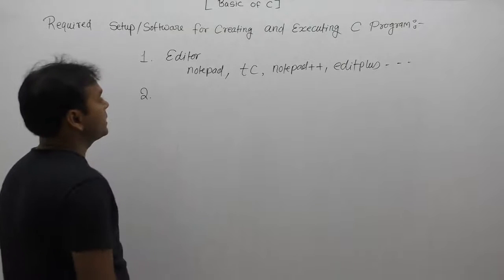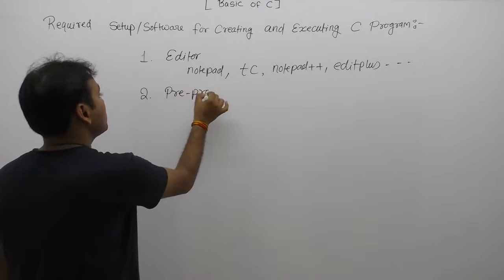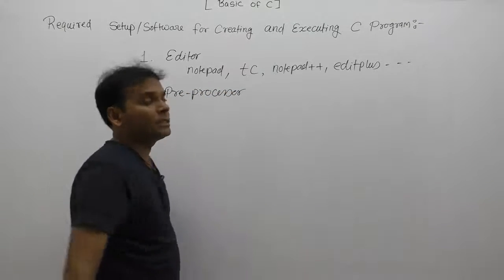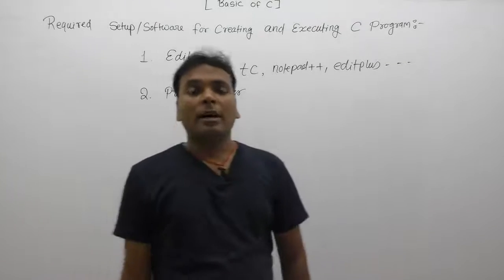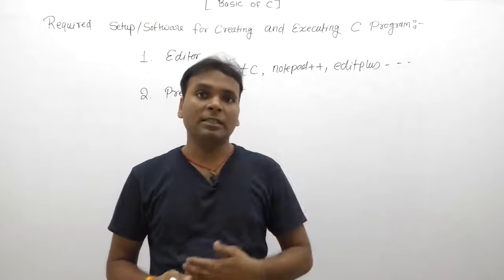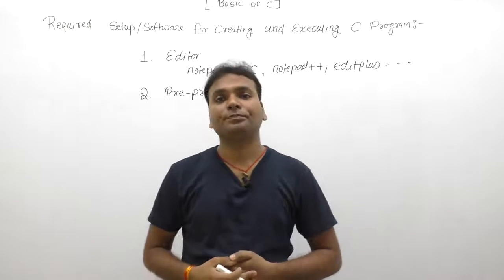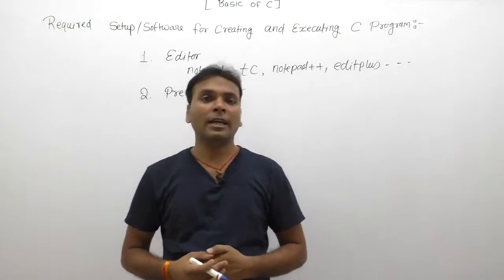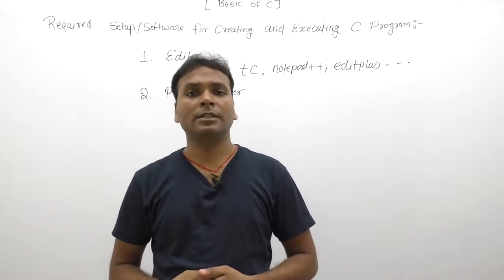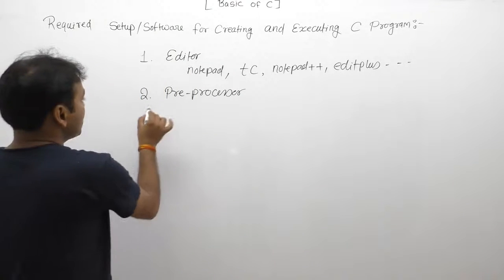After writing the source code with the help of editor software, the next required tool is preprocessor software. Preprocessors are generally used to process directives or macro statements, which start with the hash symbol. We will discuss preprocessing directives in detail during the pre-processing phase.